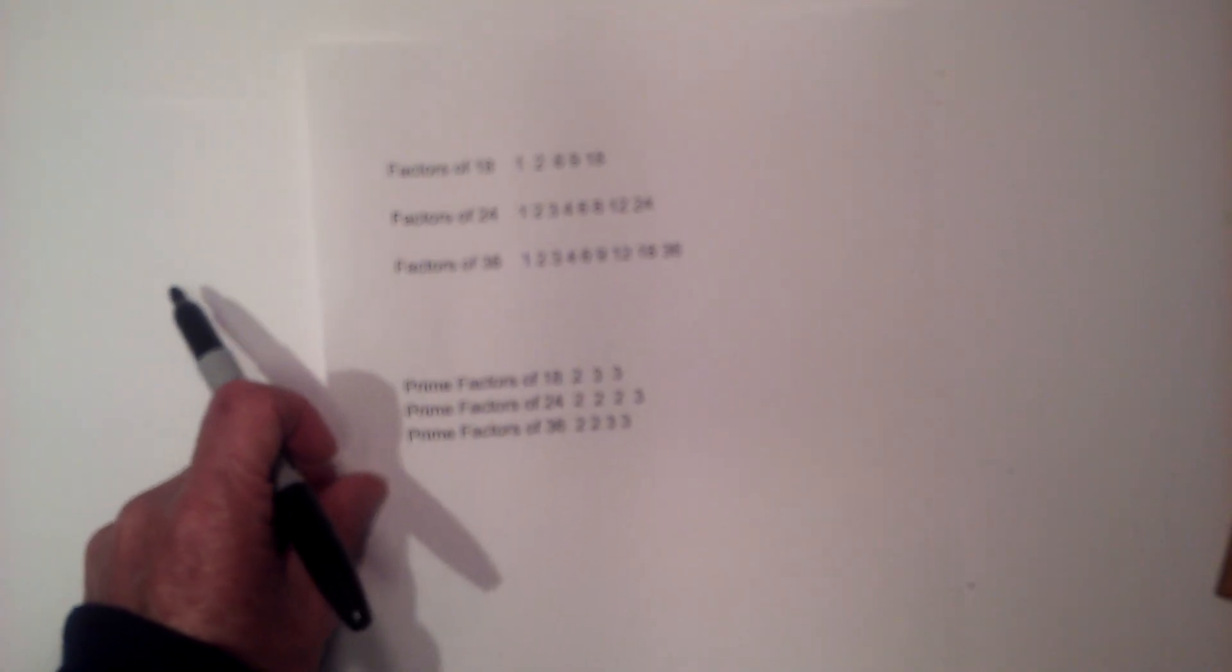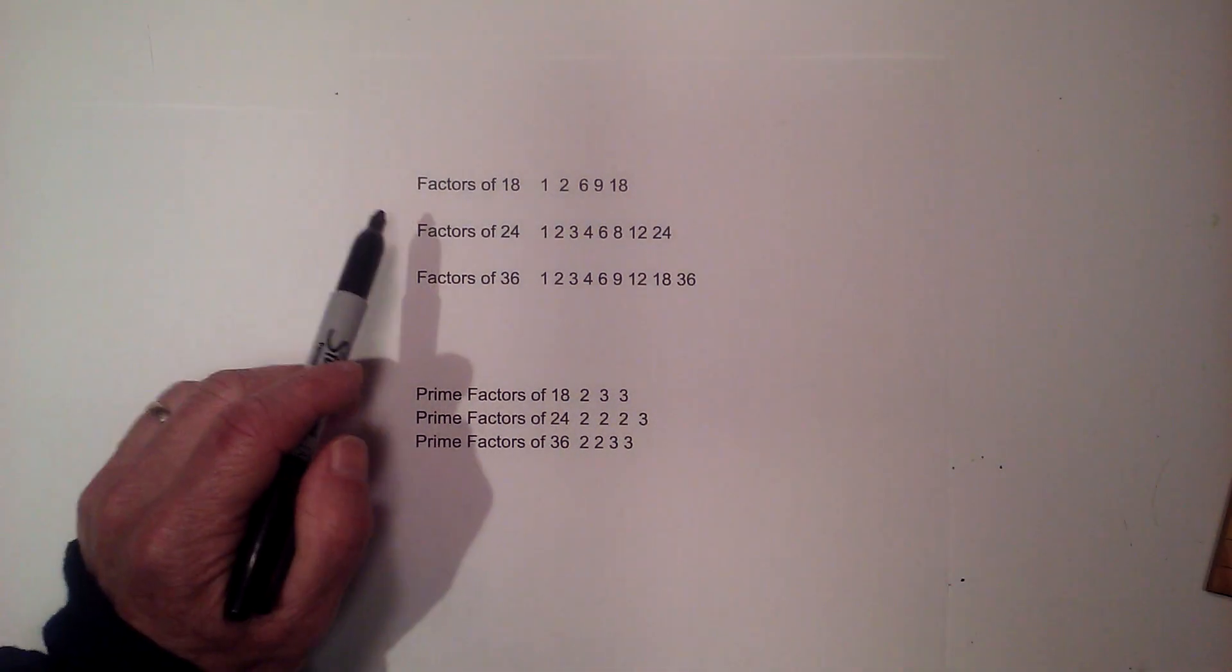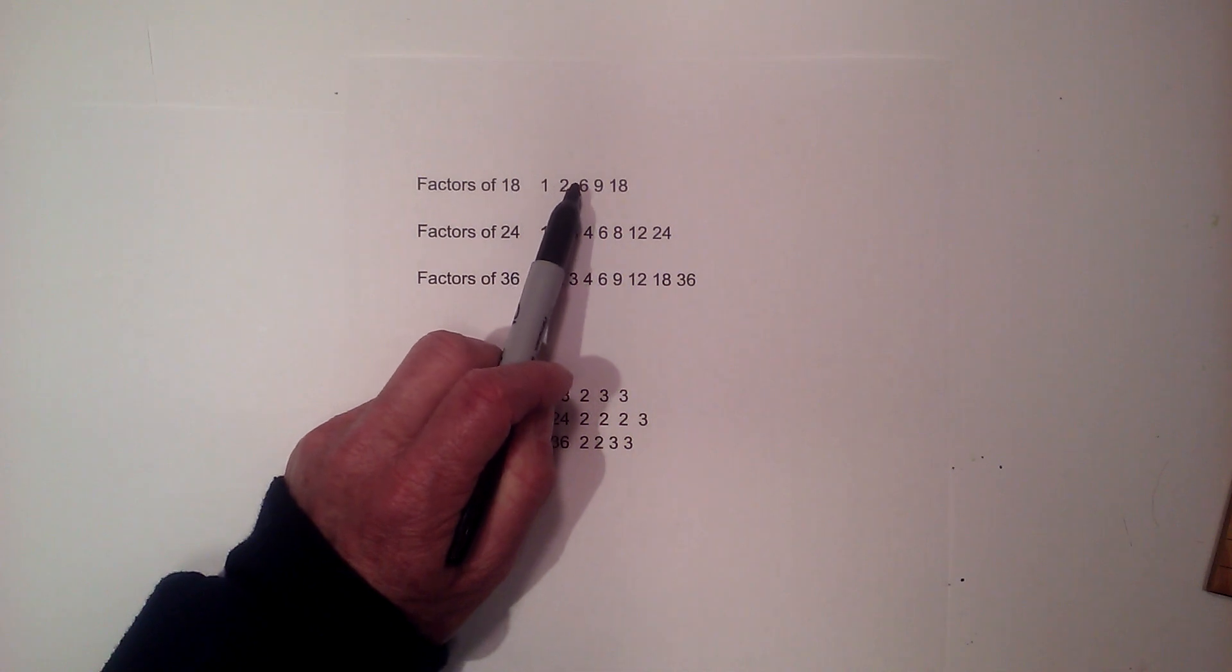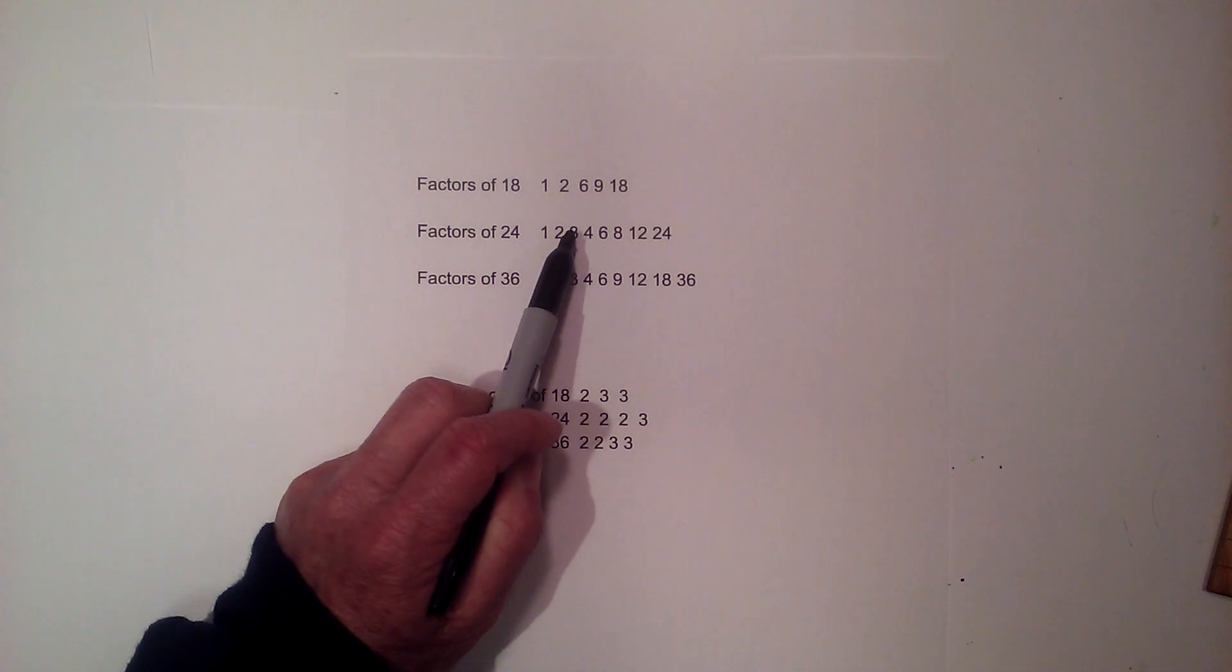In sake of time, here are the factors of 18: 1, 2, 6, 9, 18. Factors of 24: 1, 2, 3, 4, 6, 8, 12, 24. And for 36: 1, 2, 3, 4, 6, 9, 12, 18, 36.